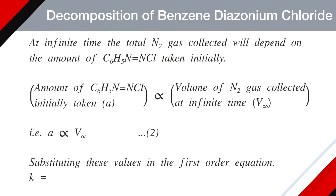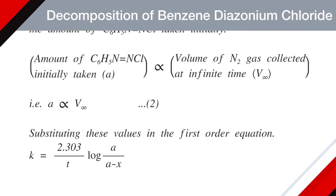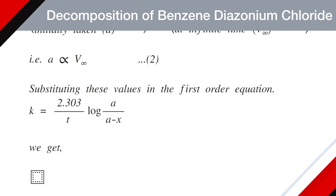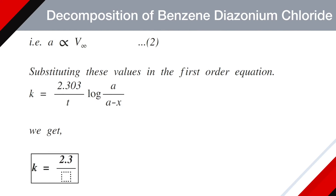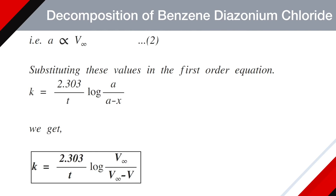Substituting these values in the first-order equation — K equals 2.303 divided by T, log of A divided by (A minus x) — we get K equals 2.303 divided by T, log of V∞ divided by (V∞ minus Vt).